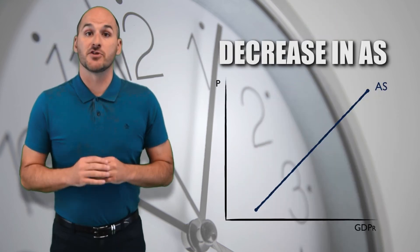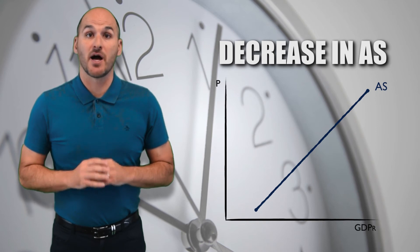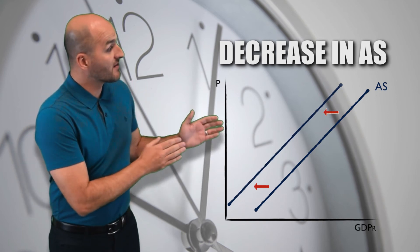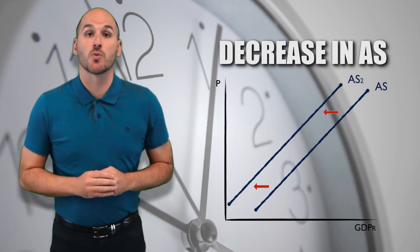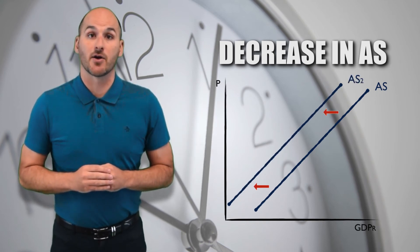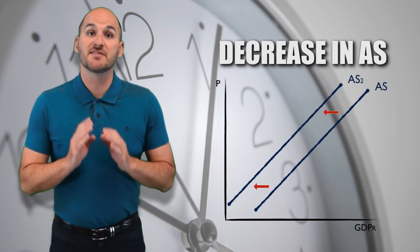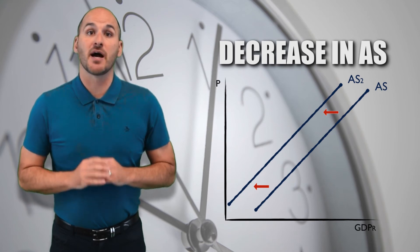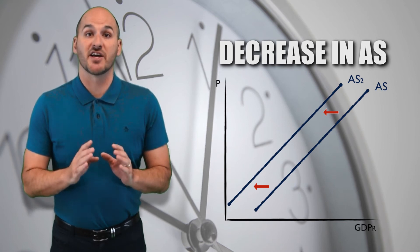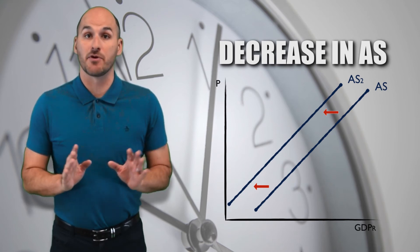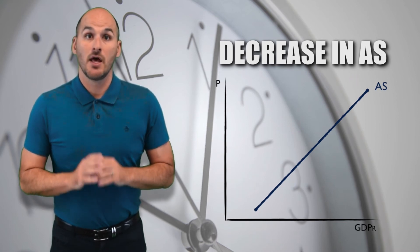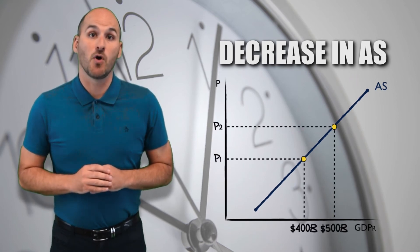A decrease in short-run aggregate supply across the economy, signified by a leftward shift of the short-run aggregate supply curve, means that domestic firms supply lesser quantities of economic goods at every price level.